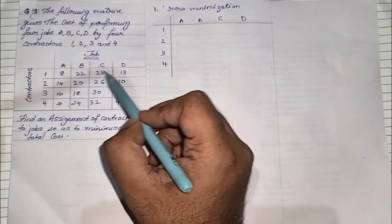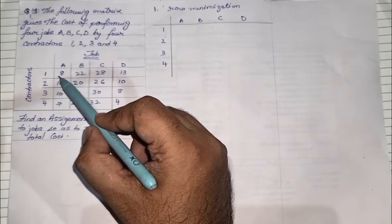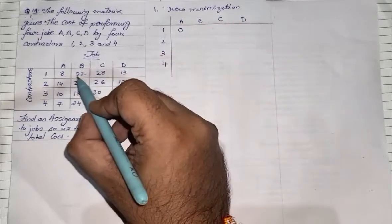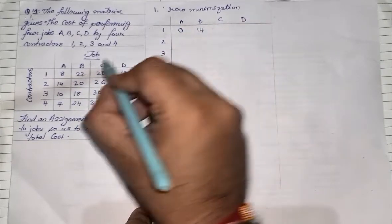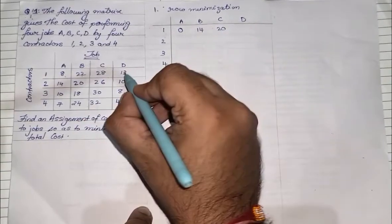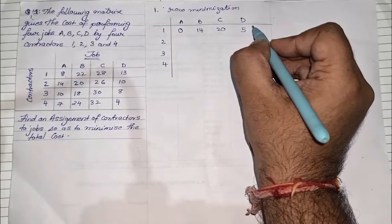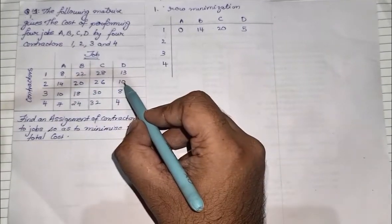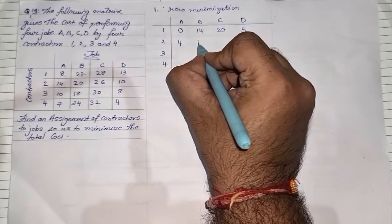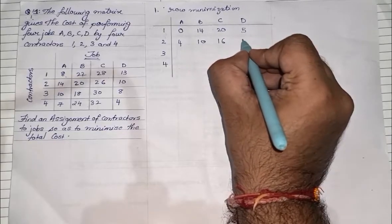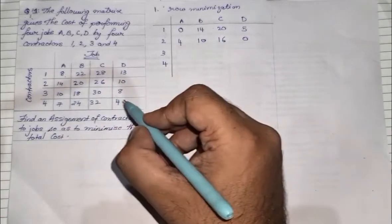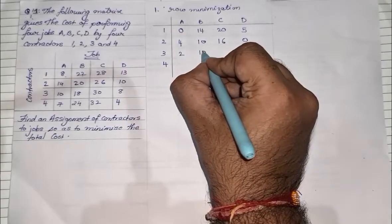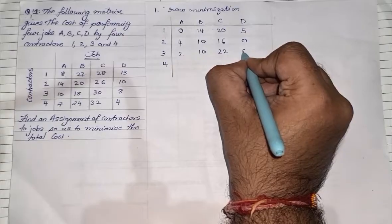In row one, the minimum value is 8. So: 8 − 8 = 0, 22 − 8 = 14, 28 − 8 = 20, 13 − 8 = 5. In row two, the minimum value is 10: 14 − 10 = 4, 20 − 10 = 10, 26 − 10 = 16, 10 − 10 = 0. In row three, the minimum value is again 8: 10 − 8 = 2, 18 − 8 = 10, 30 − 8 = 22, 8 − 8 = 0.